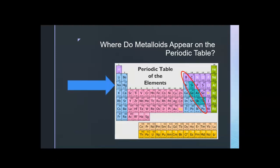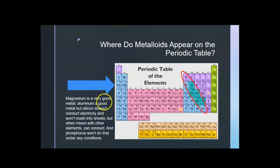Let's just look at the third row of the periodic table, the third period. Magnesium, we know, is a very good metal. Aluminum is a good metal. But silicon will not conduct electricity and will not mash into sheets. When mixed with other elements, though, it can conduct electricity. And phosphorus will not do so under any conditions. So the metalloids kind of have a little bit of the properties of both.